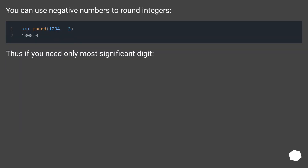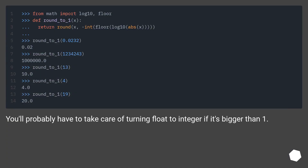You can use negative numbers to round integers. Thus if you need only the most significant digit, you'll probably have to take care of turning a float to an integer if it's bigger than one.